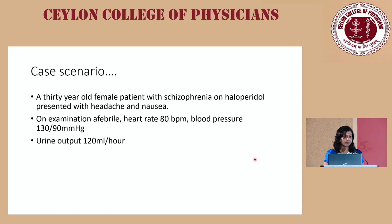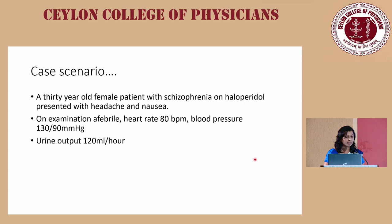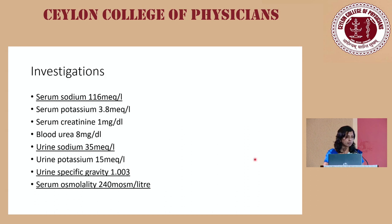I'll begin with a case scenario. A 30-year-old female presented with unspecific headache and nausea. She is a diagnosed patient with schizophrenia, on haloperidol which was defaulted for two months. On examination, she was afebrile with heart rate 80 and blood pressure 130/90. Her urine output was 120 mls per hour. Labs showed serum sodium 116, urine sodium 35, urine specific gravity 1.003, and serum osmolality 214. All other investigations were normal.